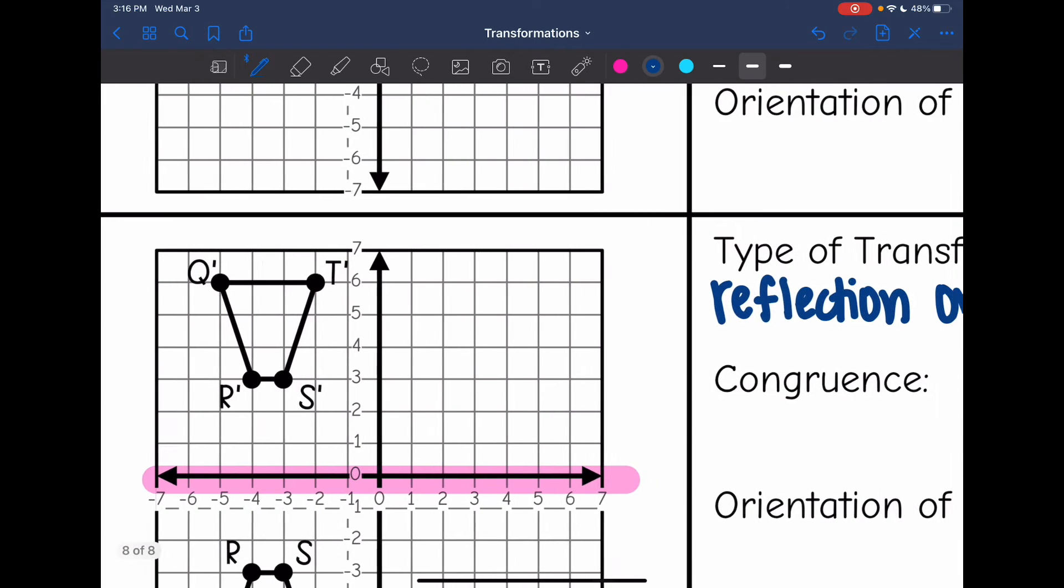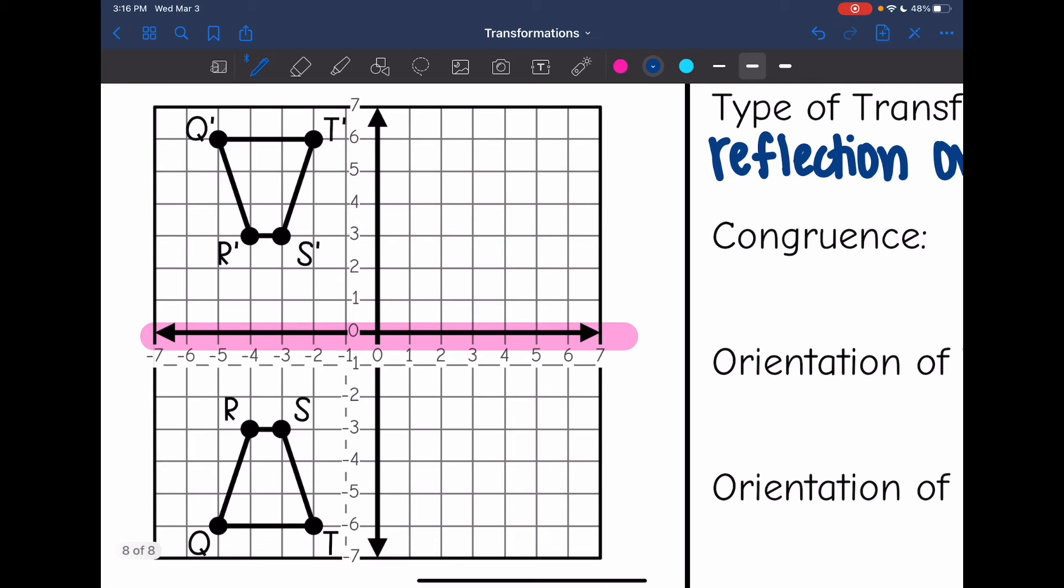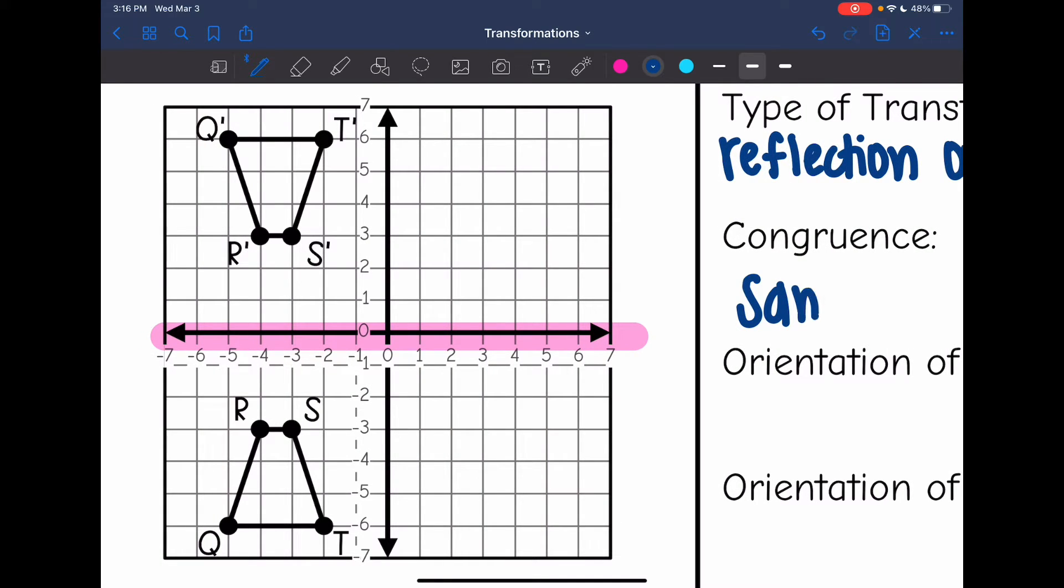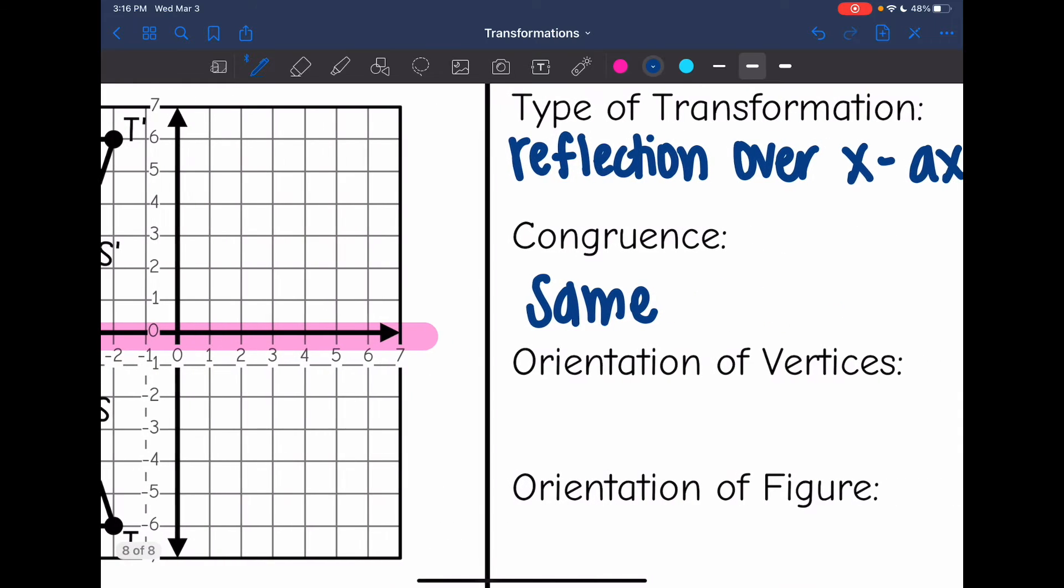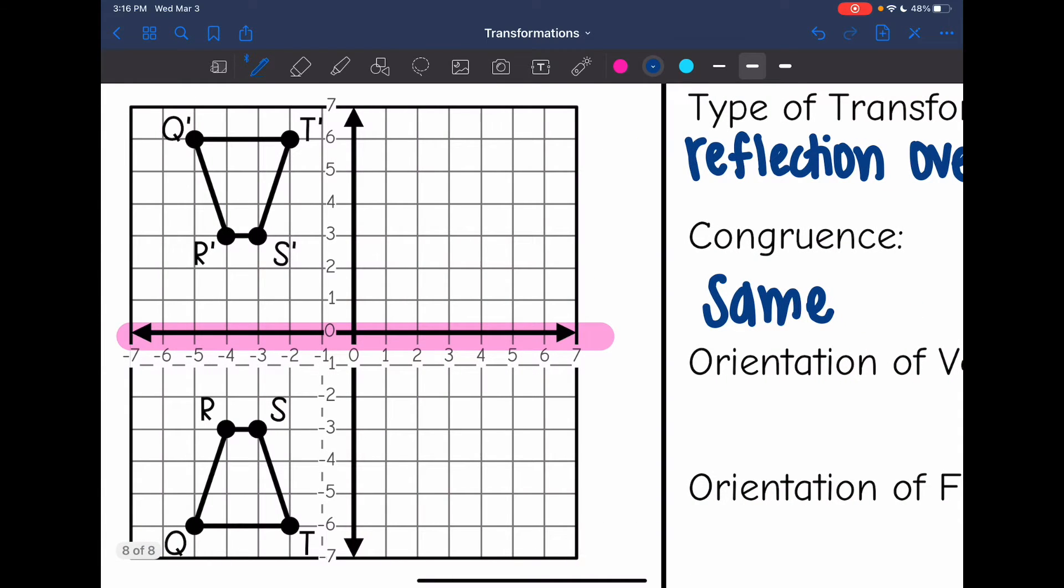Our congruence, we did not change size at all. So it stayed the same. The orientation of the vertices, we want to check the order of the letters.